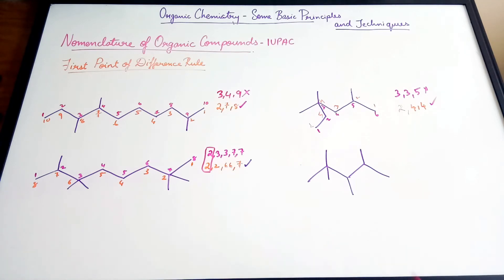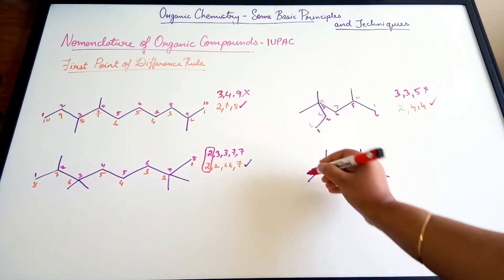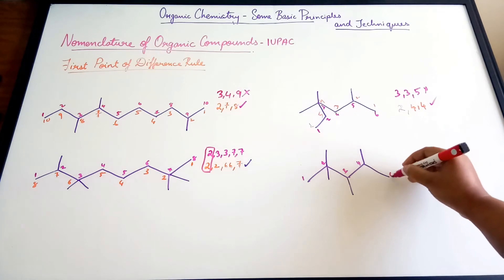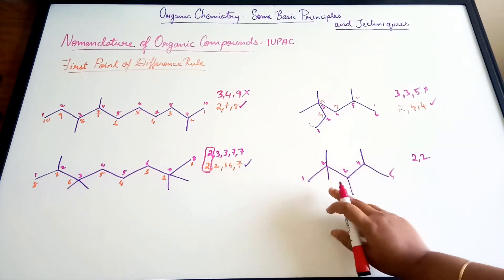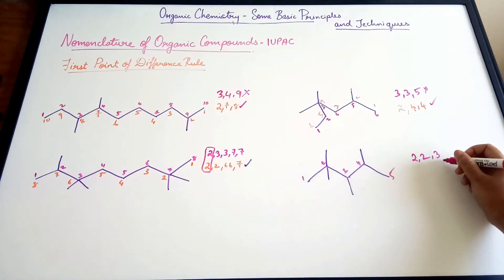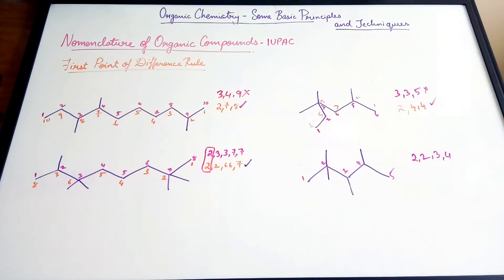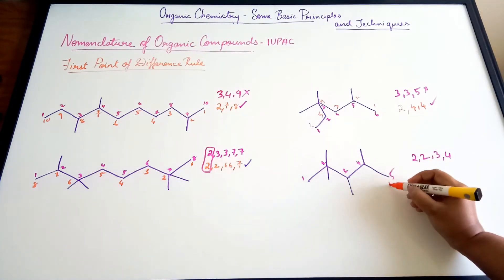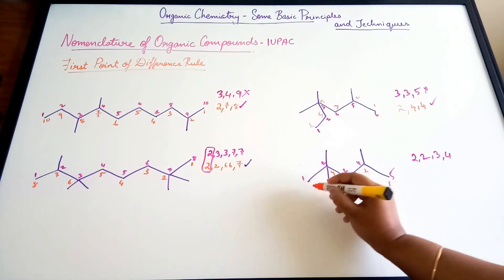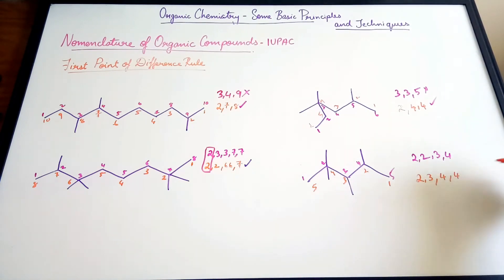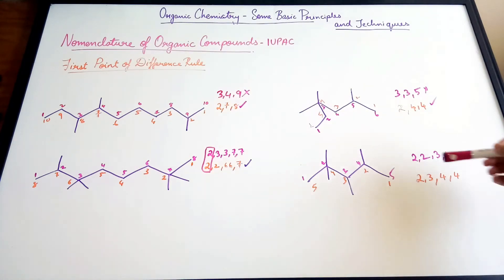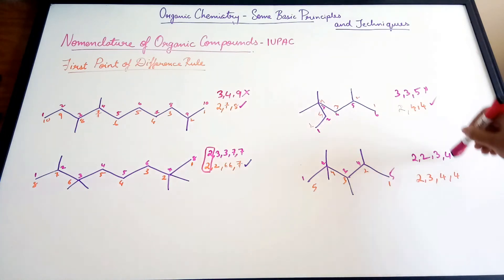The last example has a five-carbon chain. Going left to right: the second carbon is substituted with two groups (2,2), then the third carbon is substituted, and the fourth is also substituted. Going right to left: the second carbon is substituted, the third carbon is substituted, and the fourth carbon is substituted by two groups. The first point of difference — two and two — is the same, so that's not considered.